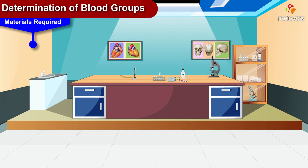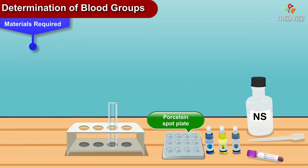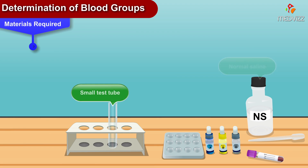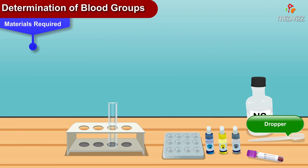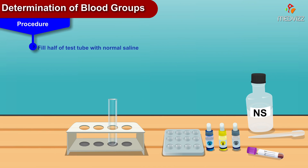Materials required: freshly collected blood sample, porcelain spot plate, normal saline, a small test tube, a dropper, and anti-sera of anti-A, anti-B, and anti-D. For the procedure of blood typing, first fill half of the test tube with normal saline.